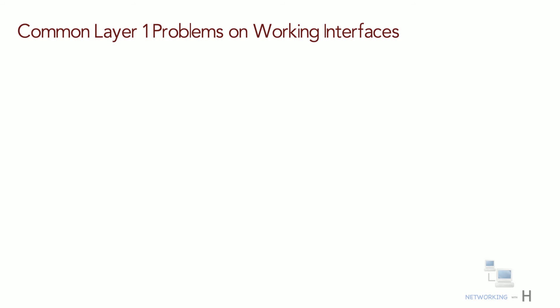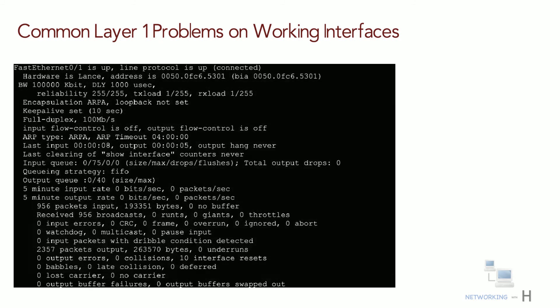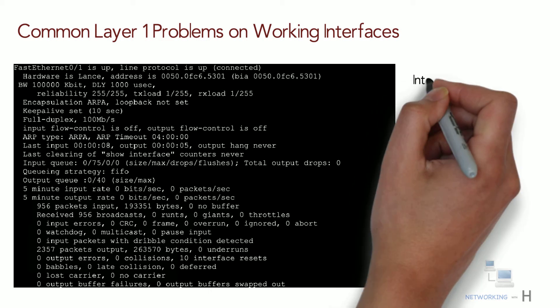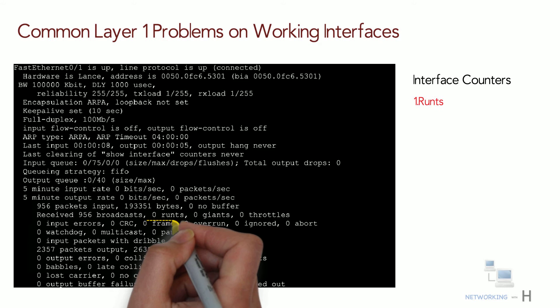Next, let's look at some common Layer 1 problems on working interfaces. When the interface reaches the connected or up/up state, the switch considers the interface to be working, and at the same time keeps various interface counters. These counters can help identify problems even though the interface is in connect state, such as issues related to duplex mismatch or physical transmission, or cases where a received frame has had its bits changed.